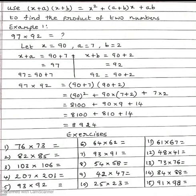Use the formula (x+a)(x+b) = x² + (a+b)x + ab to find the product of two numbers.